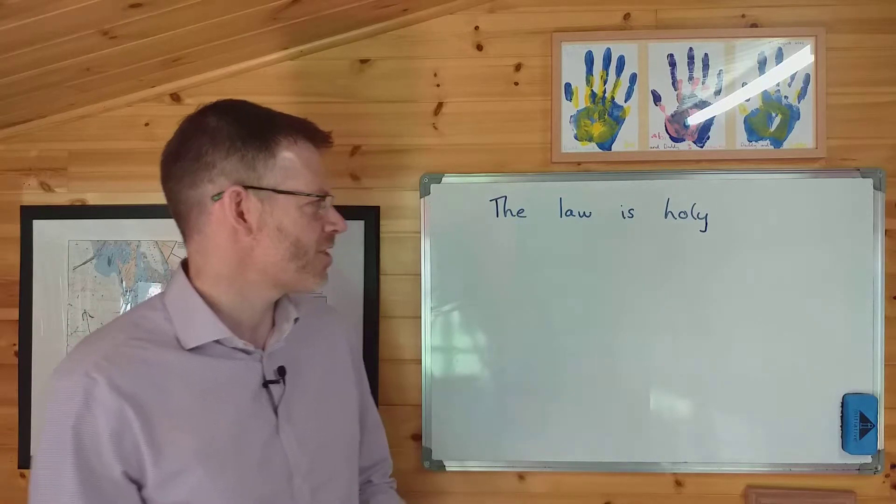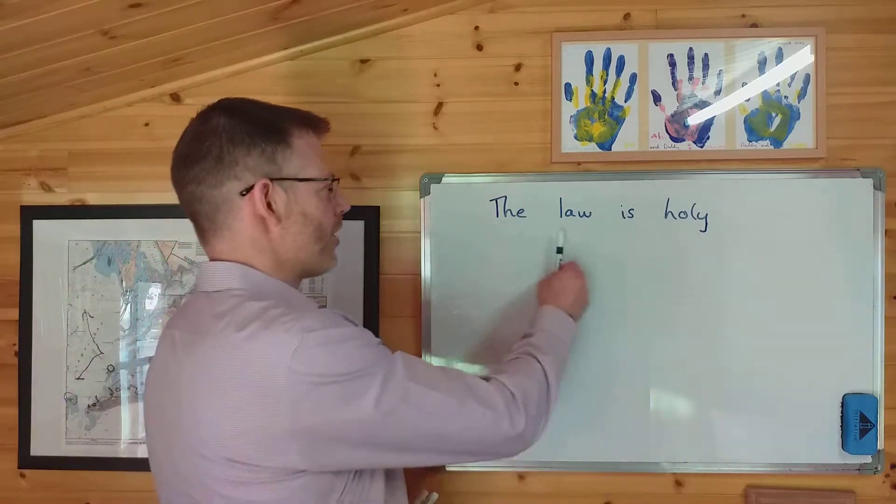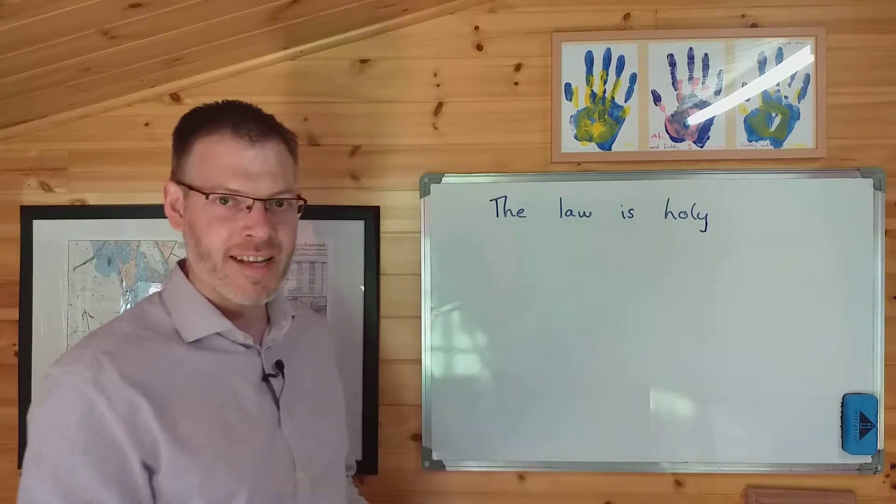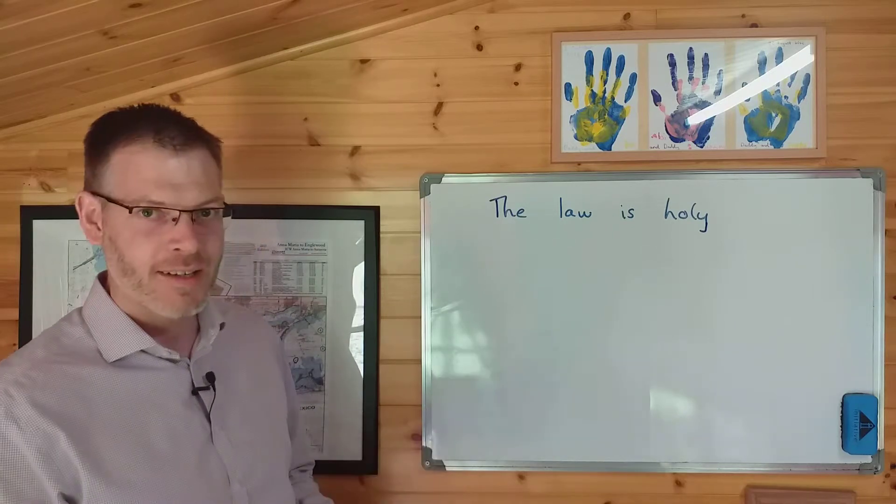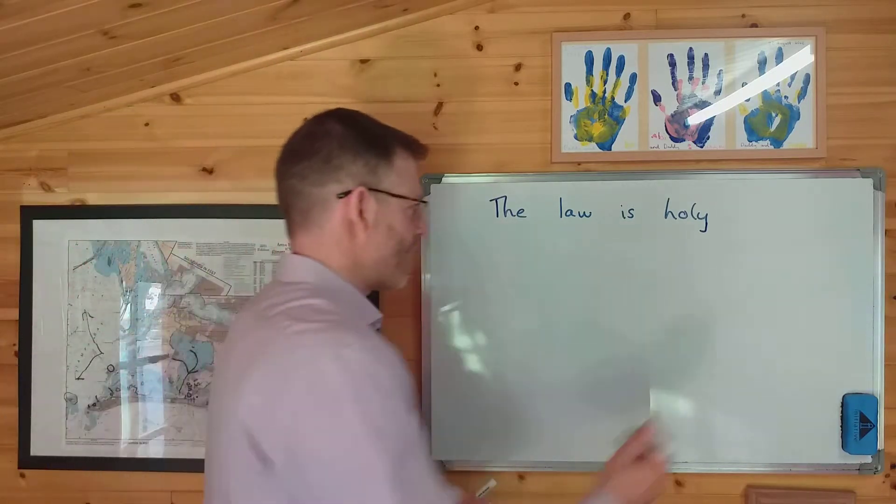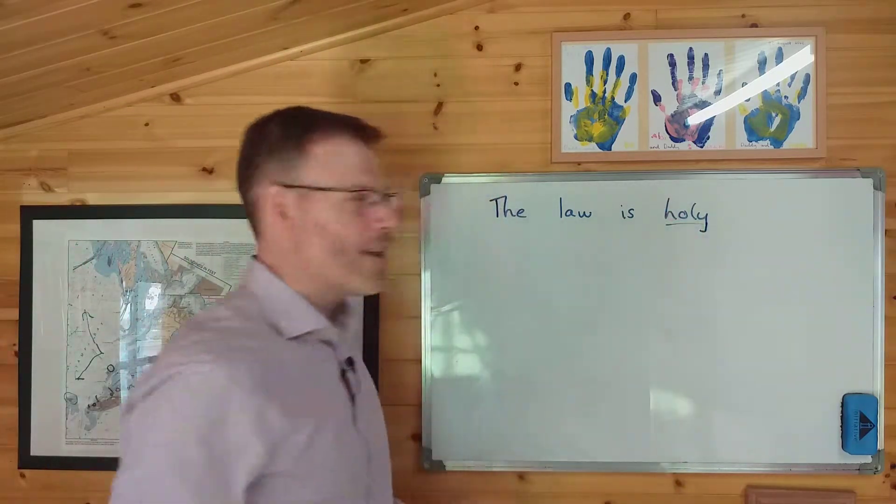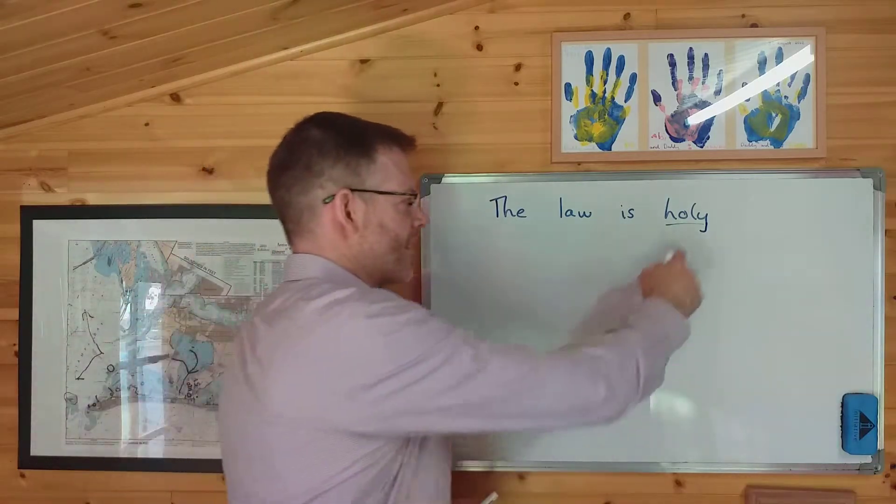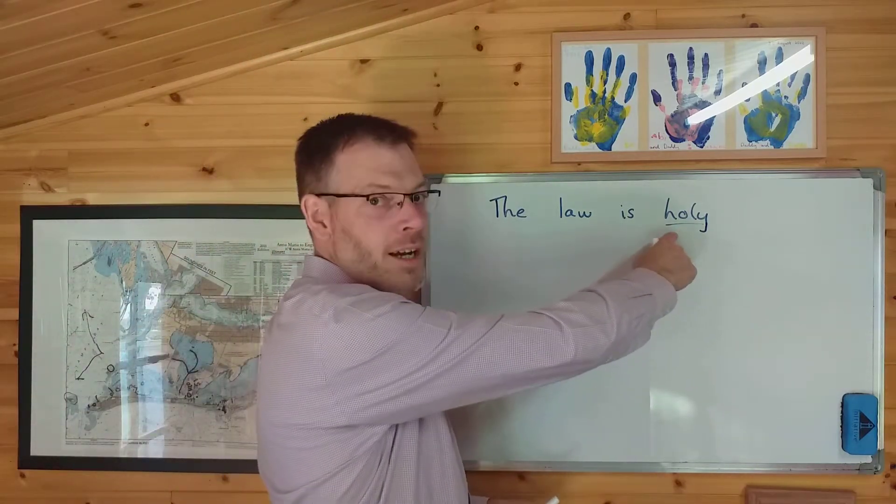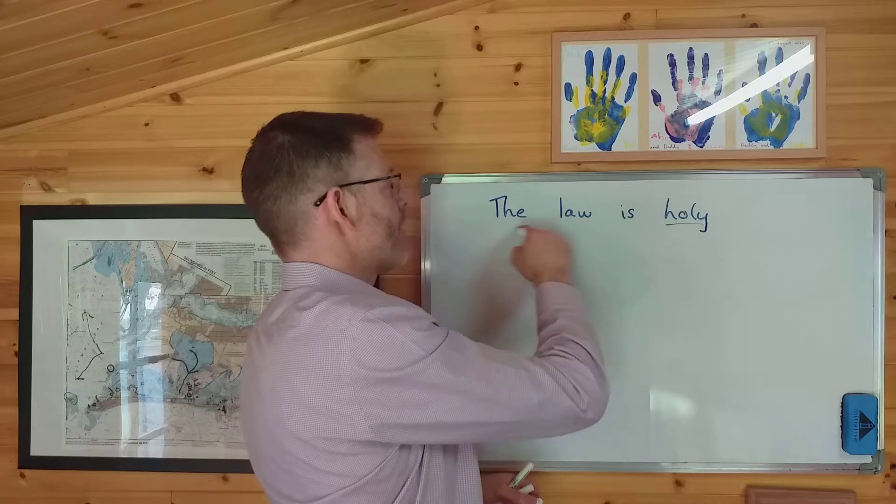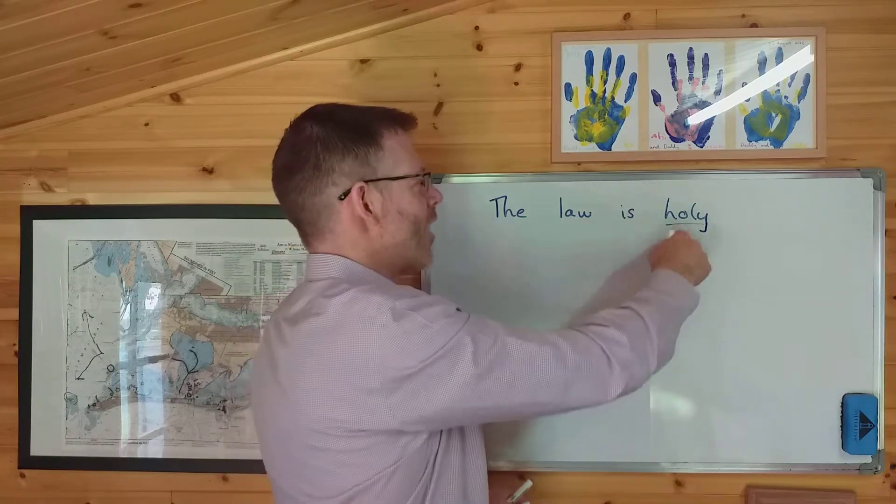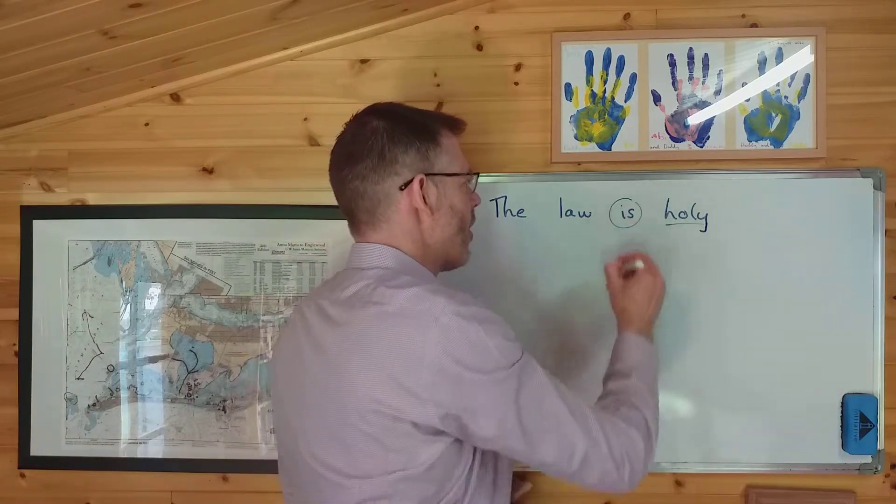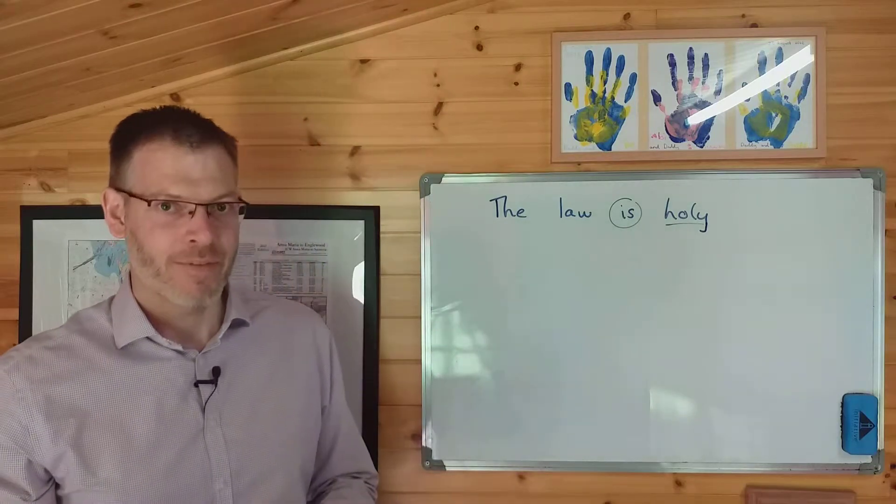That is to say, adjectives used in sentences like this one: the law is holy. Just take a second to spot the adjective. Can you spot it? Of course you can. The adjective is this little baby right here, holy, and we say we are predicating the quality of being holy, holiness, of the law.